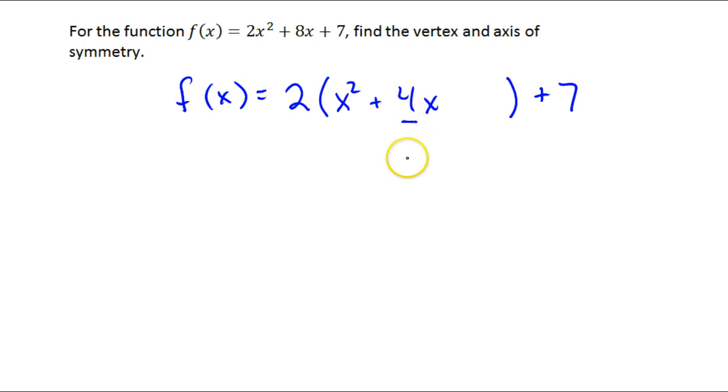Here comes completing the square. I'm going to take half of that middle term, that 4, square it, and add it inside. So half of 4 is 2, squared is 4. Now I've added 4 times 2, which is 8. So to keep it balanced, I have to subtract 8.